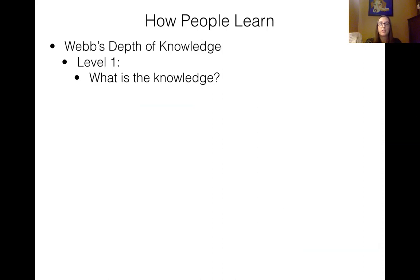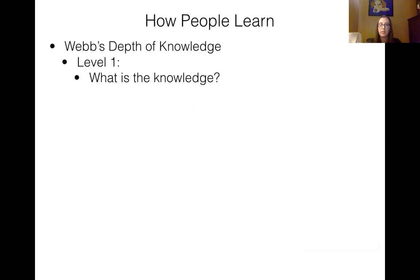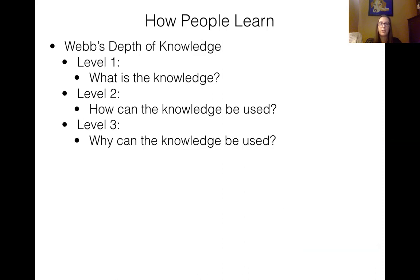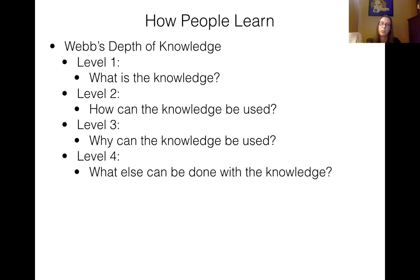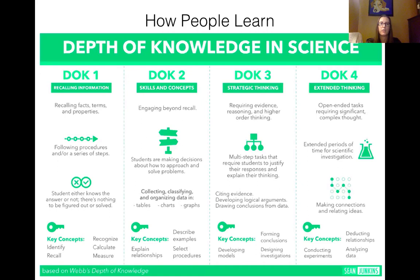Webb's depth of knowledge is a similar sort of hierarchy, but it contains four different levels. Level one, that lowest level, is: what is the knowledge? Two is: how can we use the knowledge? Three is: why can we use that knowledge — why is that knowledge useful and important, whereas maybe some other knowledge isn't? And then four is: what else can we do with this knowledge? I like this infographic on those four levels.